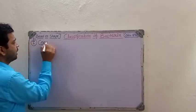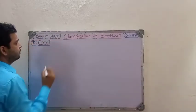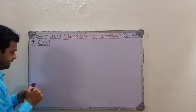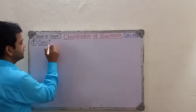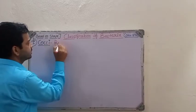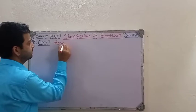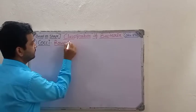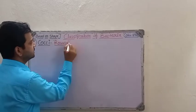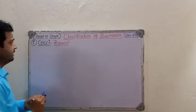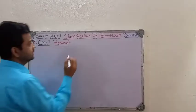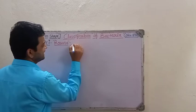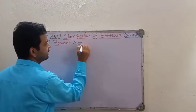When we are discussing classification based on shape, the first type is called cocci. Cocci are going to have a round shape. Whatever bacteria we discuss in this group, they are going to have different arrangements of round-shaped bacteria. The first example we can take is monoococci.